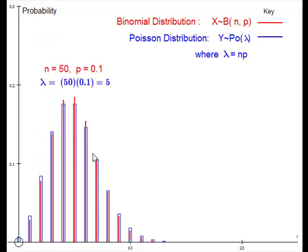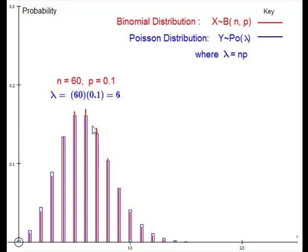And finally, when n equals 60. Very good. So it looks like as n gets bigger and p gets smaller, the two distributions become similar.